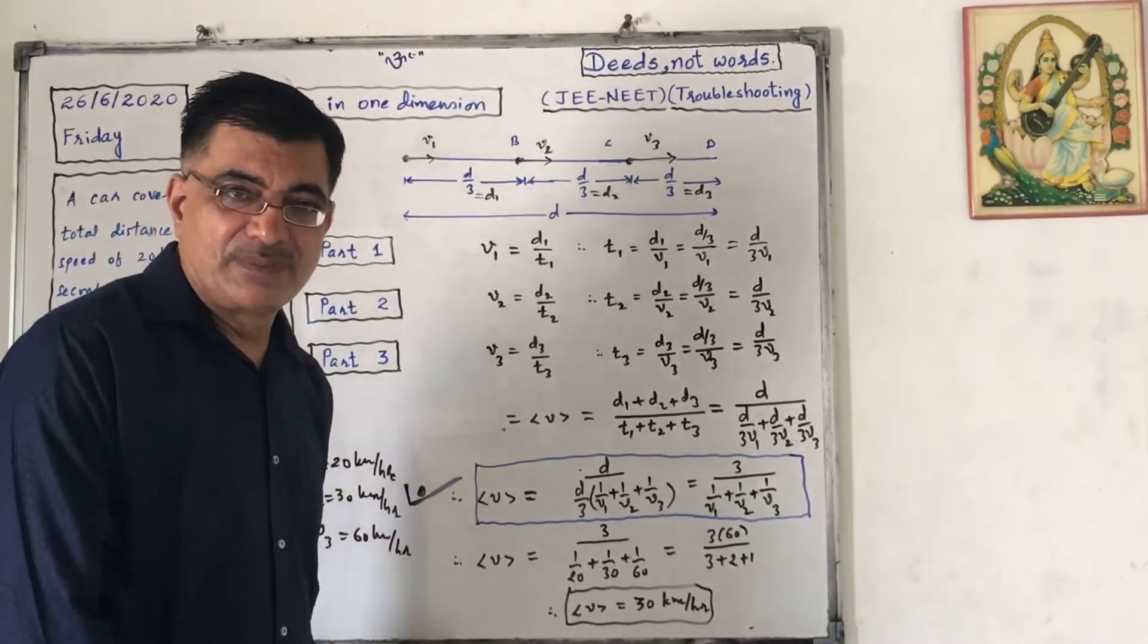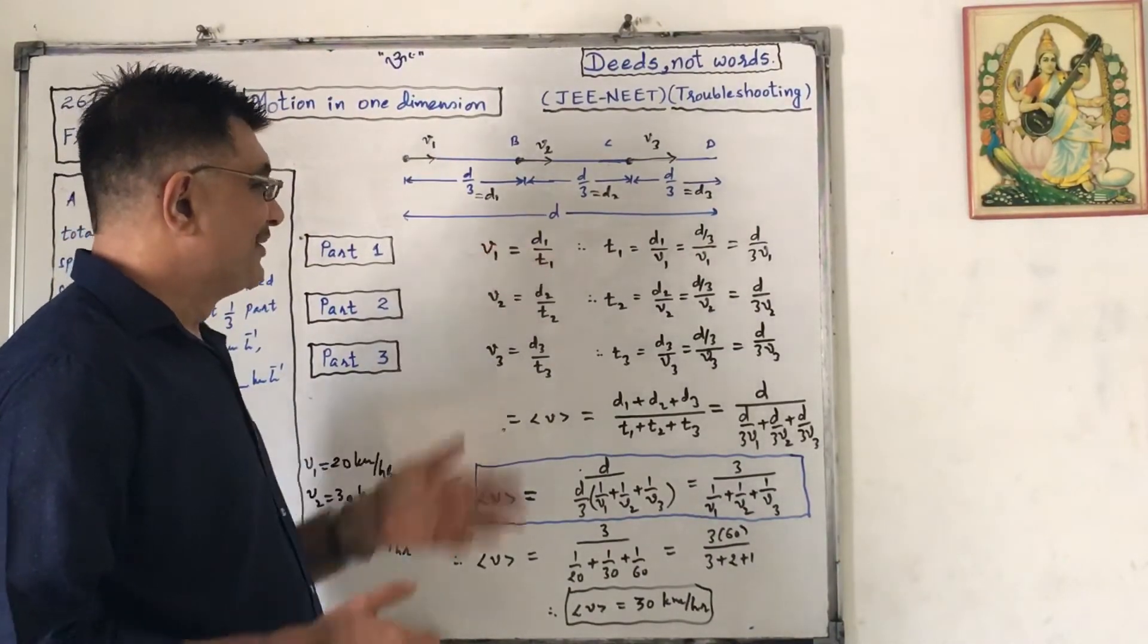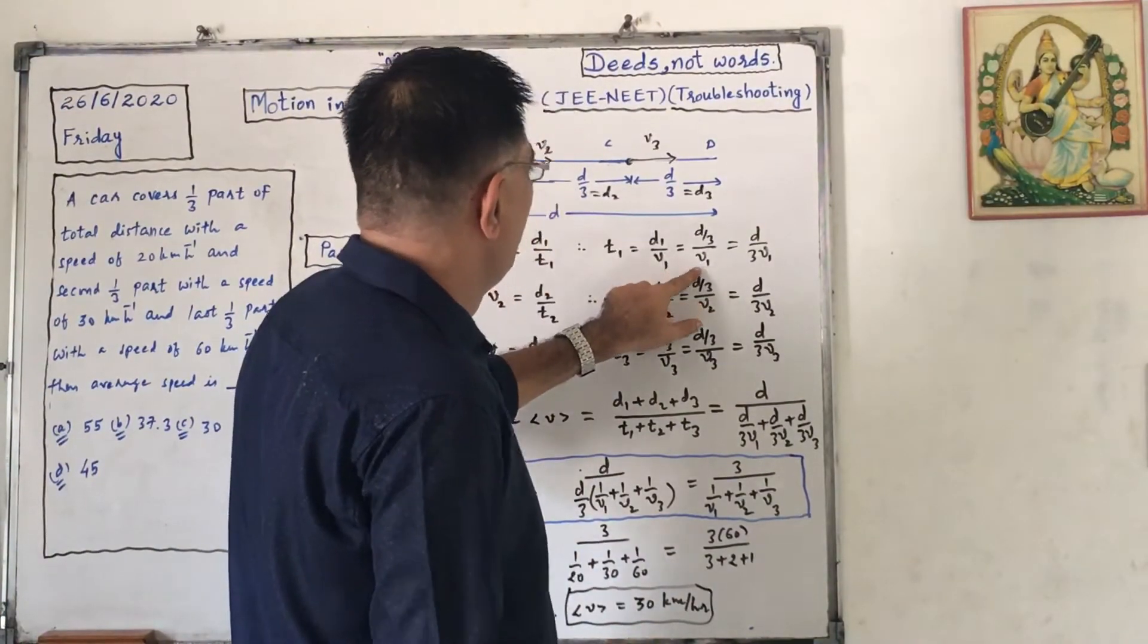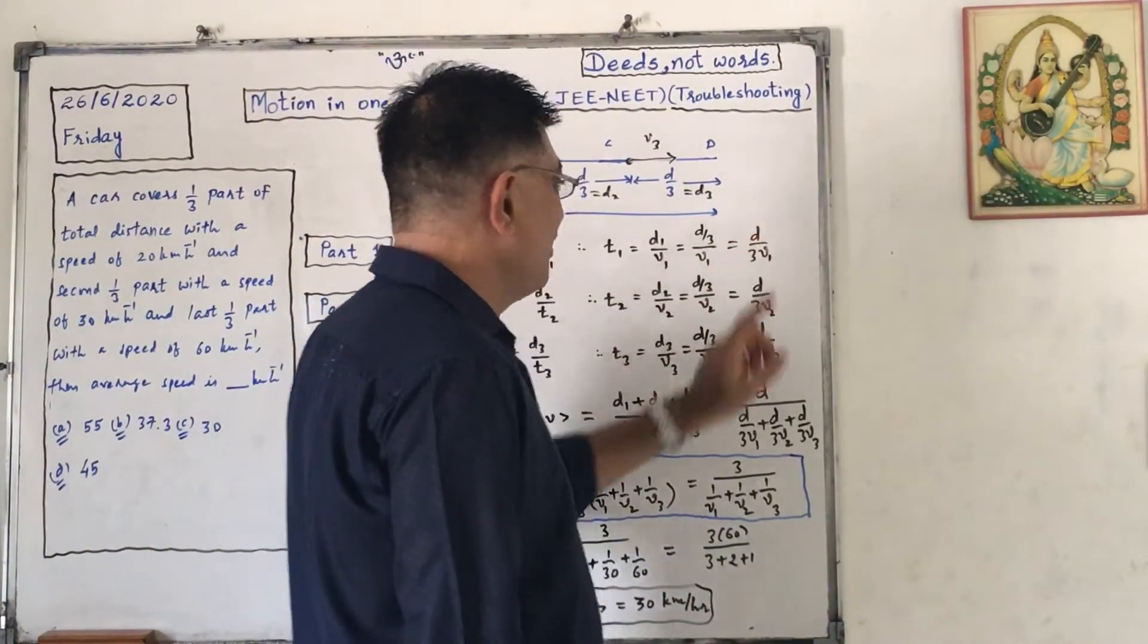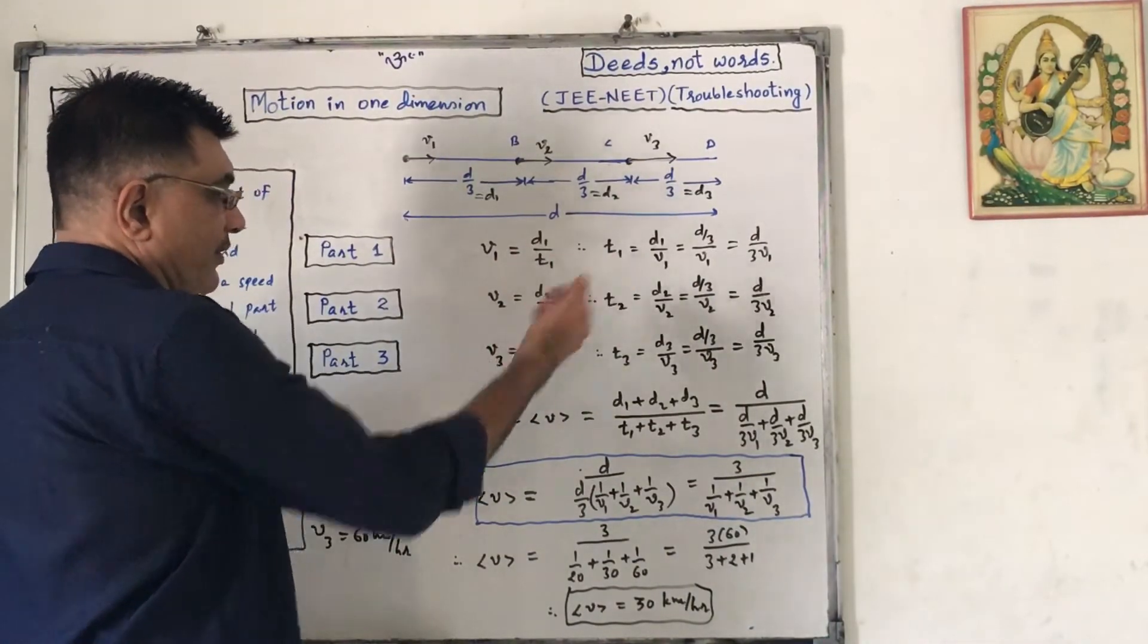First of all, we know that speed equals to distance upon time. So V1 equals to D1 by T1, so T1 equals to D1 by V1. For us, D1 equals to D by 3 upon V1. Similarly, V2 equals to D2 by T2, so T2 equals to D2 by V2.